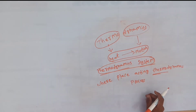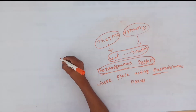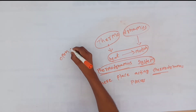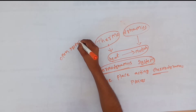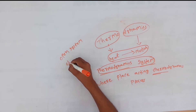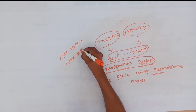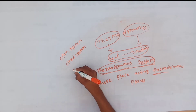And next, we have three types of systems. We have open system, closed system, and the other one is isolated system.